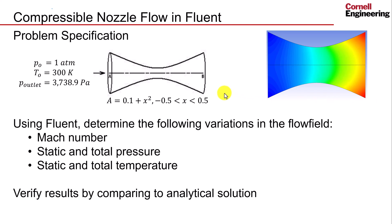In this problem, we will be looking at a converging-diverging nozzle with given pressure conditions at the inlet and the outlet. The geometry of the nozzle is defined by the following variation in circular cross-sectional area. Using Fluent, we will investigate the resulting Mach number variations, static and total pressure, and static and total temperature variations, and we will verify our results by comparing them to an analytical solution.